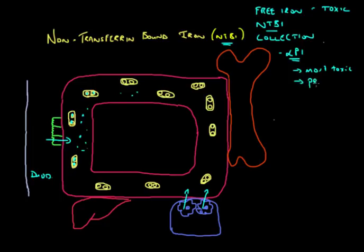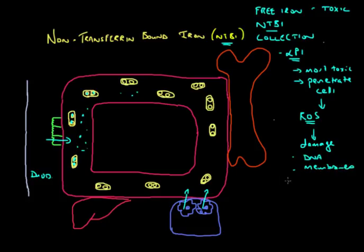In addition, it can penetrate cells. And once it gets into a cell, it will lead to the generation of what we call reactive oxygen species, or free radicals. And these free radicals can damage a lot of things inside the cell, for instance mitochondria, lipids, RNA, you name it. The end result of all this is cellular damage that will lead to organ damage.